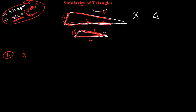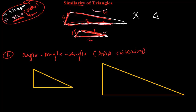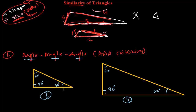The first criterion is Angle-Angle-Angle (AAA). If you have two triangles, whether bigger or smaller, that doesn't matter — if all three angles are equal, for example this is 90°, this is also 90°, this is 30°, this is also 30°, and this is 60°, this is also 60° — since the sum of internal angles is 180° in both triangles, if all three angles are equal, then both triangles are similar.